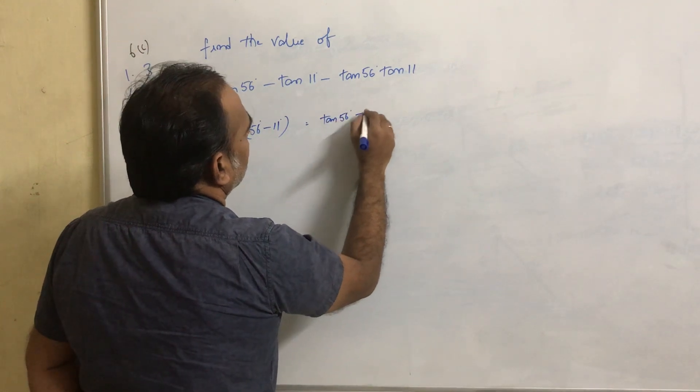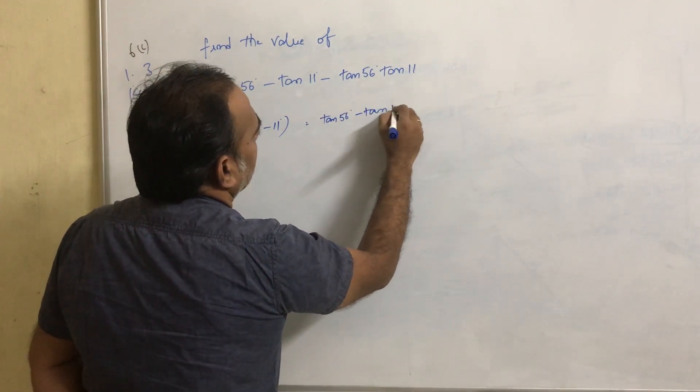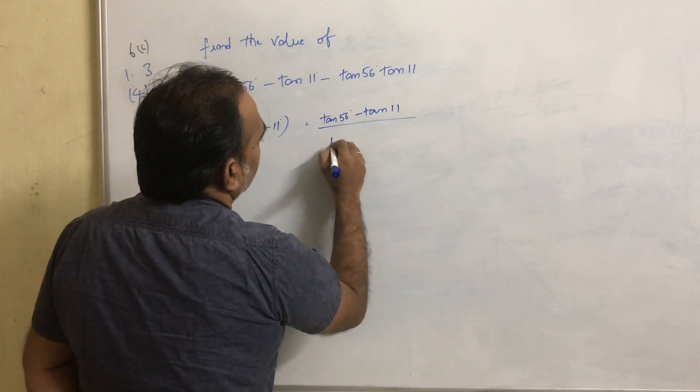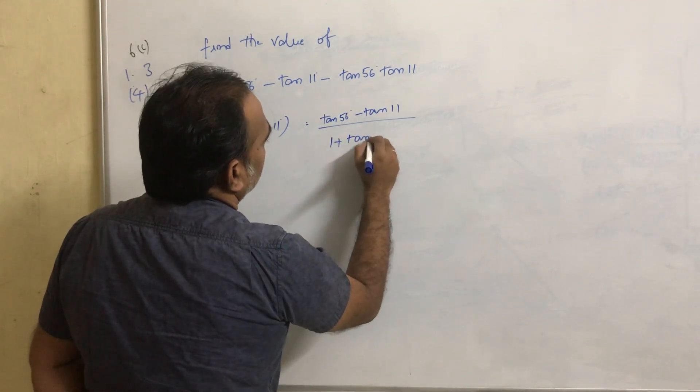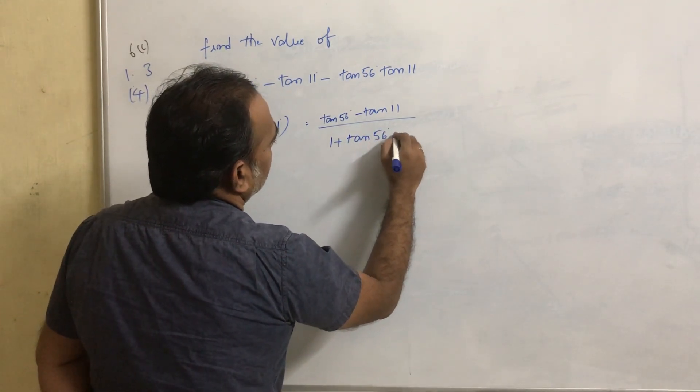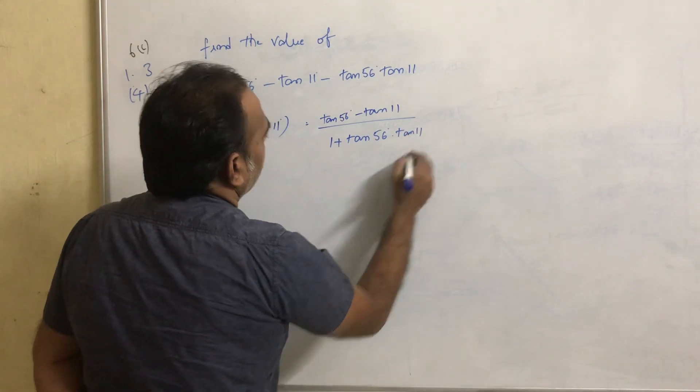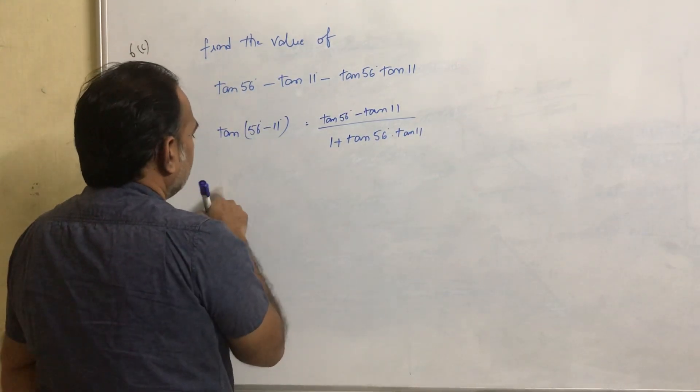That is tan 56° - tan 11° all divided by 1 + tan 56° into tan 11°.